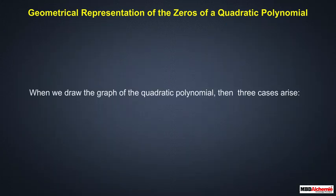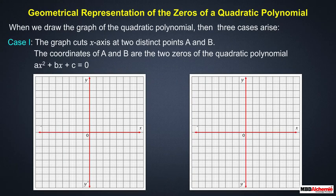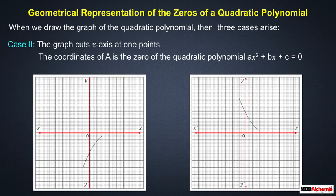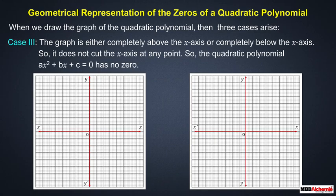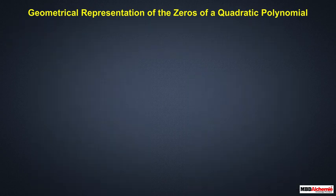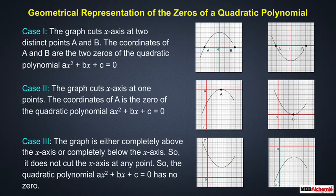When we draw the graph of a quadratic polynomial, three cases arise. Case 1: the graph cuts the x-axis at two distinct points A and B — these coordinates are the two zeros of the quadratic polynomial ax² + bx + c = 0. Case 2: the graph cuts the x-axis at exactly one point — that coordinate is the zero of the polynomial. Case 3: the graph is either completely above or completely below the x-axis, so the quadratic polynomial ax² + bx + c = 0 has no zero. Thus, a quadratic polynomial can have either two distinct zeros, two equal zeros, or no zero at all.